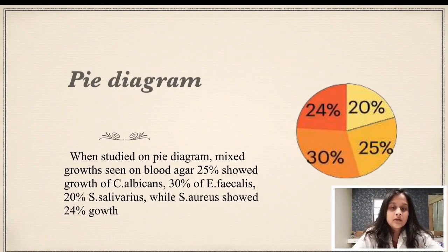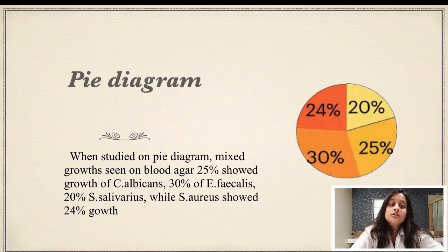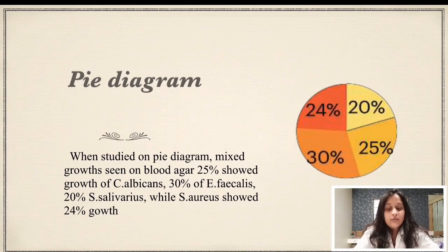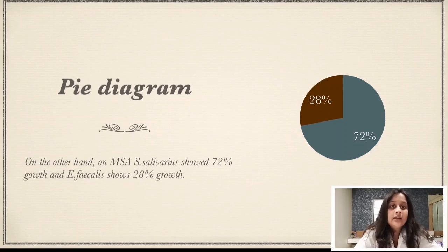Presenting the same results on a pie diagram, we can see that 25% was Candida albicans, 30% E. faecalis, 20% S. salivarius, and S. aureus had 24% of growth on blood agar. While on MSA, that is Mitis Salivarius Agar, 72% growth of S. salivarius was seen, while 28% was enterococcal species, that is E. faecalis.